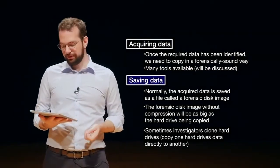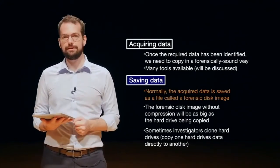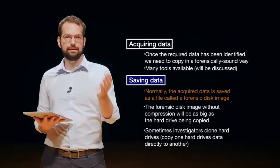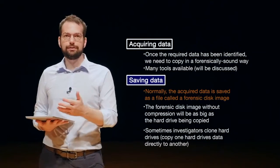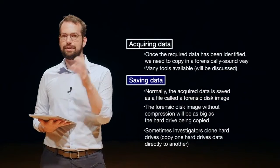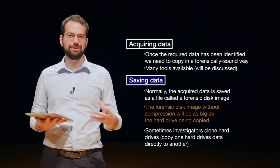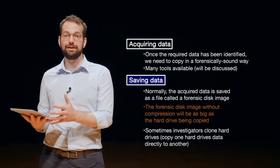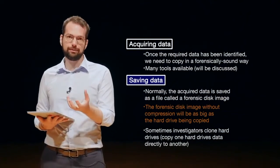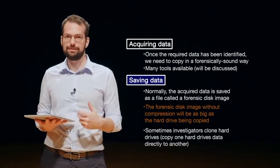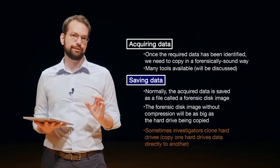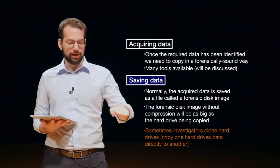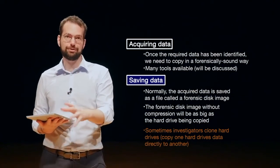Normally the acquired data is saved into a file called a forensic disk image. We copy all of the data bit-for-bit into a file that contains exactly the same data as the hard drive. As long as we don't use compression, the file size will be exactly the same as the physical disk — so these images can get very large. If we have a one terabyte hard drive, we will have a one terabyte forensic disk image. Sometimes investigators clone hard drives rather than making a file, but digital forensic disk images tend to be much more common.